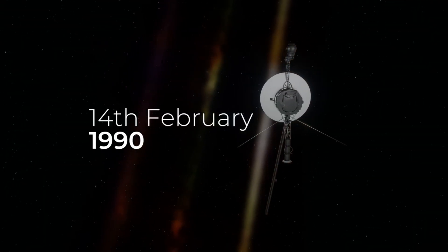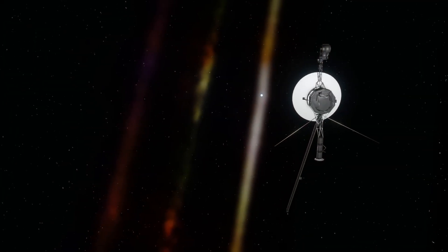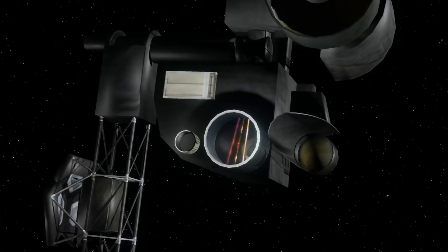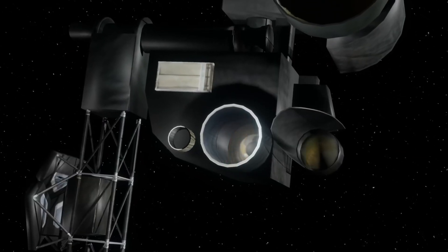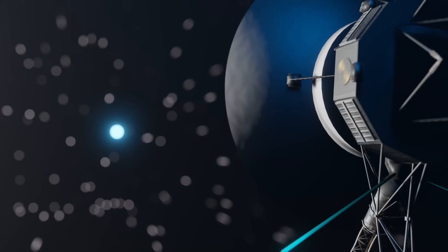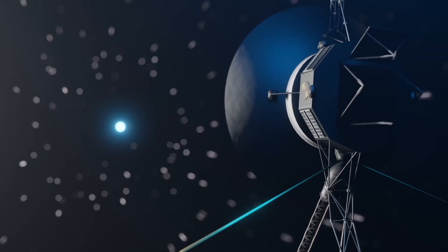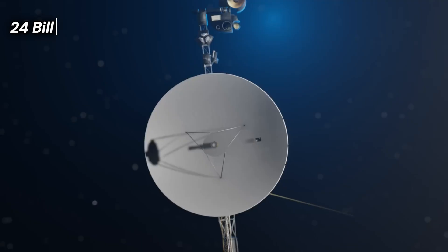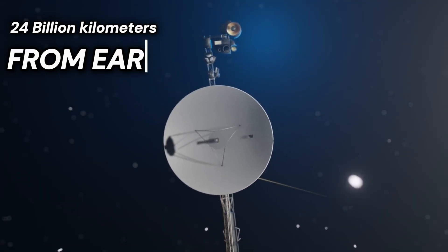But this event is even more significant. Just 34 minutes after this picture was taken, the cameras were switched off forever, leaving Voyager 1 completely blind. Since then, the spacecraft has become the furthest man-made object in space, now at a point 24 billion kilometers from Earth.